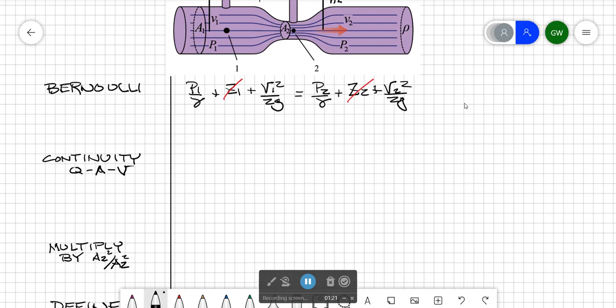Now let's bring pressure to the left hand side. The pressure terms p1 over gamma minus p2 over gamma. Wait, p1 over gamma, what does that equal? Ah, h1 and p2 over gamma, what does that equal? h2. So we have h1 minus h2 which we recognize is equal to delta h.